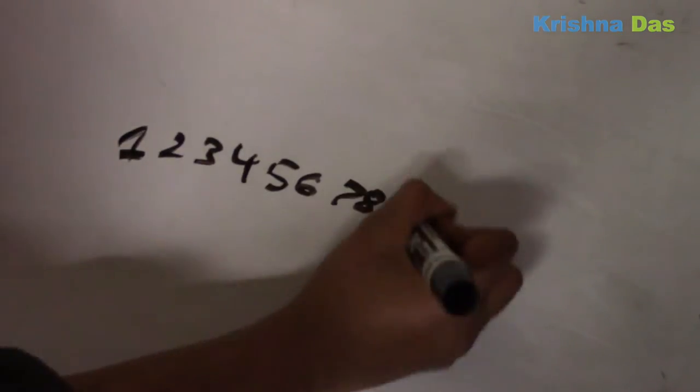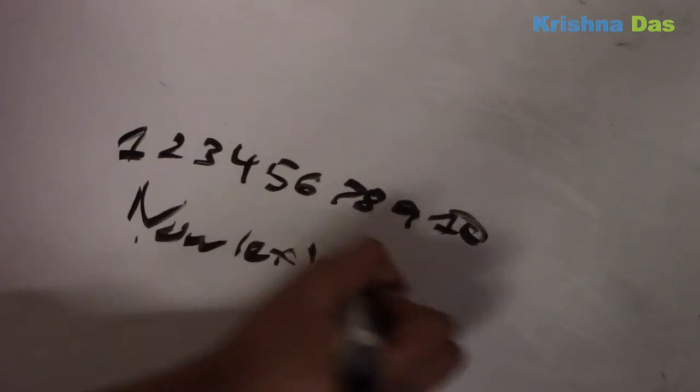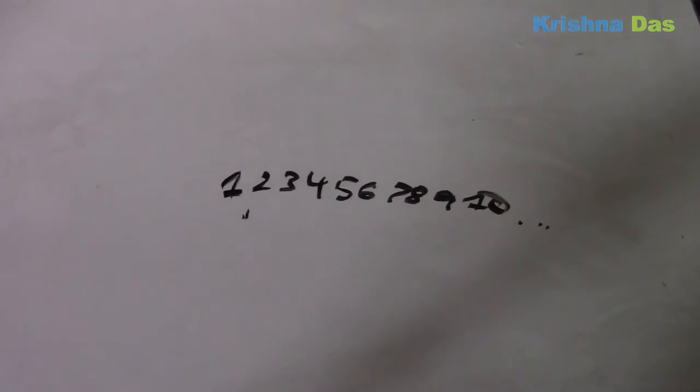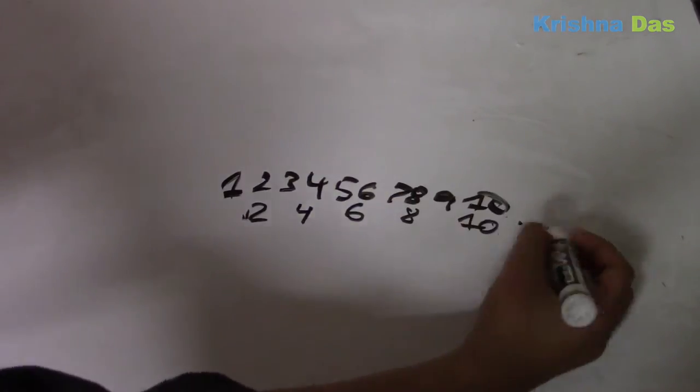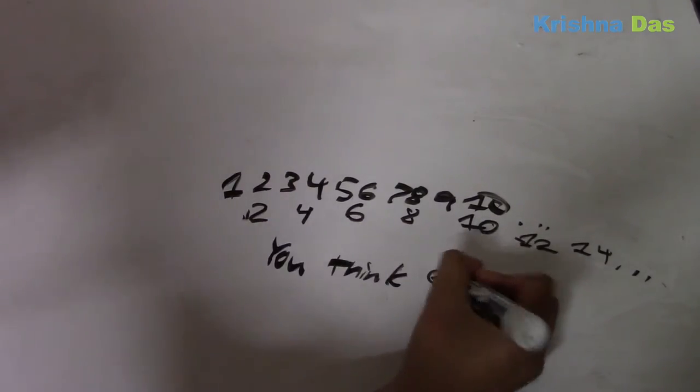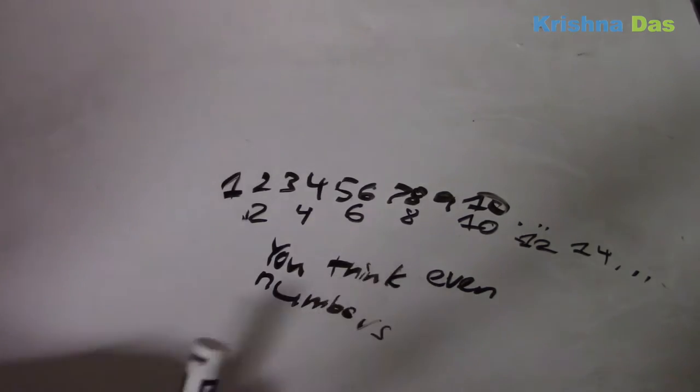So let's count by ones: 1, 2, 3, 4, 5, 6, 7, 8, 9, 10. Now let's count by twos. You would think that if we count by twos up to infinity, it would be less than counting by ones. But that's not true, because infinity is truly amazing.